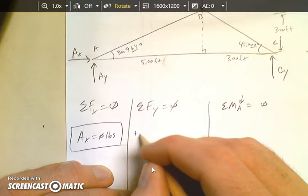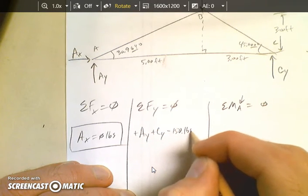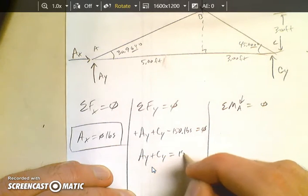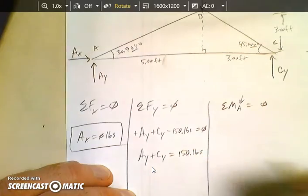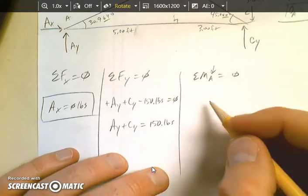In the Y direction, we have a positive AY. We have a positive CY and a negative 150 pounds. And we add up to zero. Therefore, AY plus CY equals 150. And that's all we can do. Because we have two unknowns, we need a second equation. So let me step over to here.